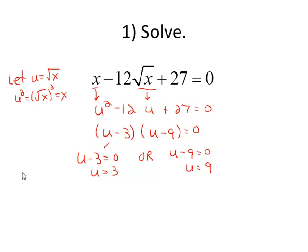Time to reverse the substitution. Let's go ahead and put in the square root of x where we had u. So square root of x equals 3. We solve this equation by squaring both sides, and we find that x equals 9 is one of our solutions.